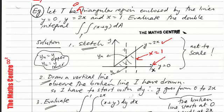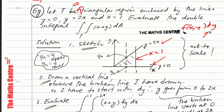Let's say we want to start with dy first, so we write F of x, y dy first. If you want to do dy first, draw a vertical line through the region that you have indicated. It can be a broken line. Draw a vertical line through this region.